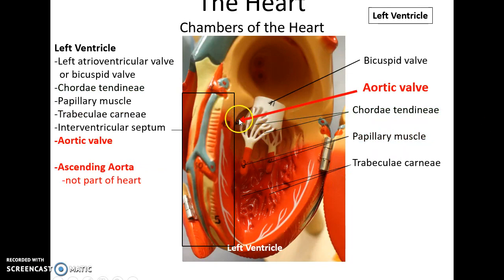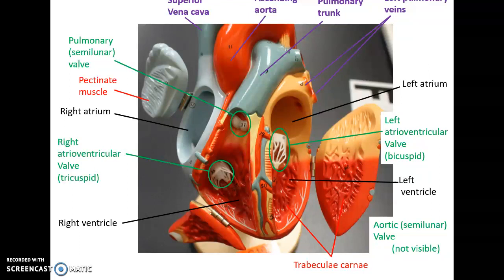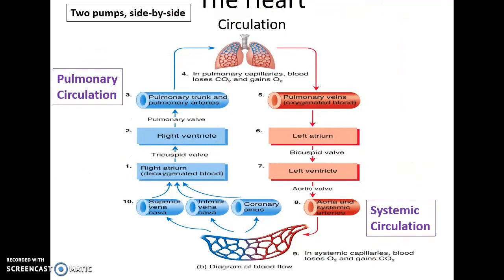There is also an additional valve called the aortic valve. When the left ventricle contracts, the blood will go through the aortic valve into the ascending aorta. The heart is basically two pumps side by side: the pulmonary circulation sends deoxygenated blood to the lungs to be re-oxygenated, and the systemic circulation sends blood throughout the body so oxygen can reach the various tissues and carbon dioxide can be returned to the heart. Both pumps work simultaneously.